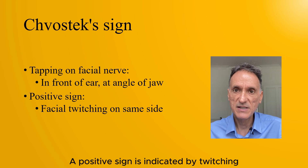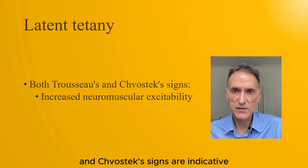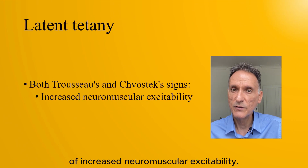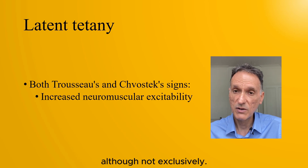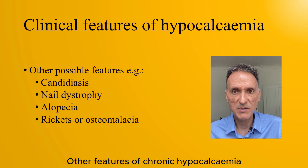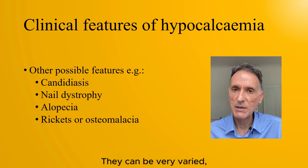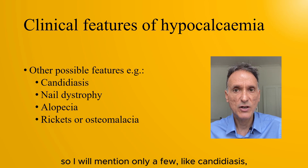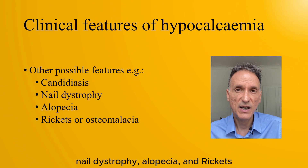A positive Chvostek's sign is indicated by twitching of the facial muscles on the same side. Both Trousseau's and Chvostek's signs are indicative of increased neuromuscular excitability, which is often associated with hypocalcemia, although not exclusively. Other features of chronic hypocalcemia depend on the underlying cause and can be very varied — including candidiasis, nail dystrophy, alopecia, and rickets or osteomalacia from chronic vitamin D deficiency.